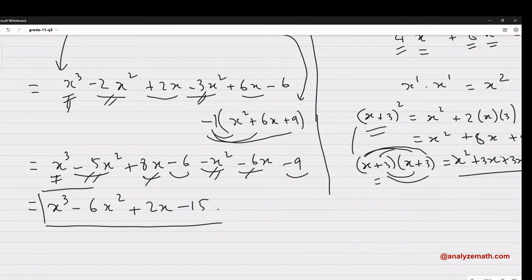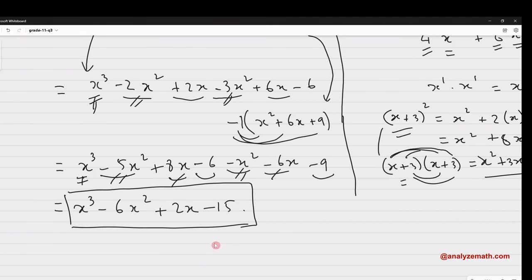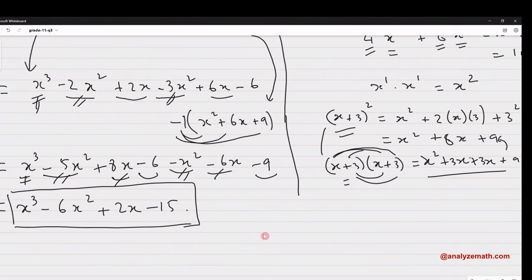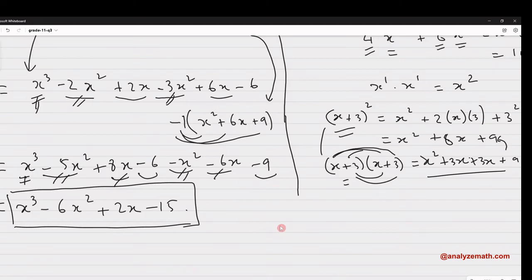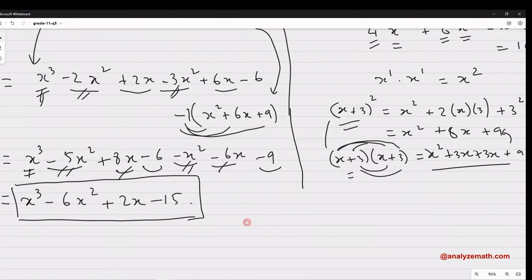So the expansion and the simplifying of the expression, after expanding and simplifying, we got x³ minus 6x² plus 2x minus 15. Now while I was doing this, I gave a lot of details and I tried to explain every step, which is good for deep understanding.